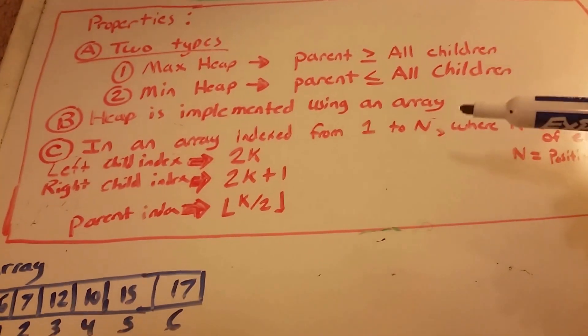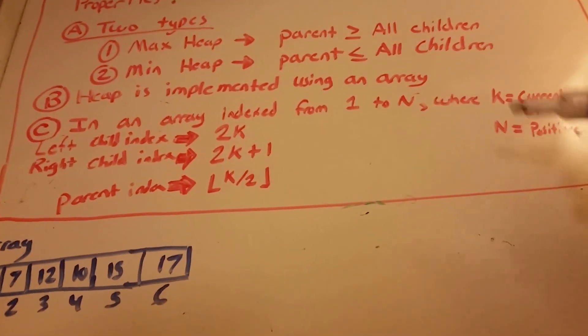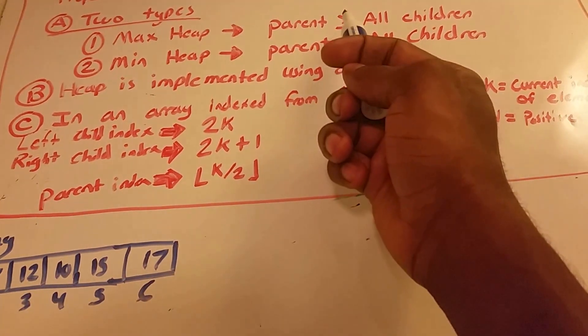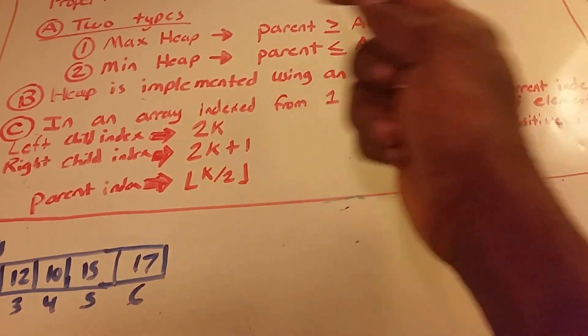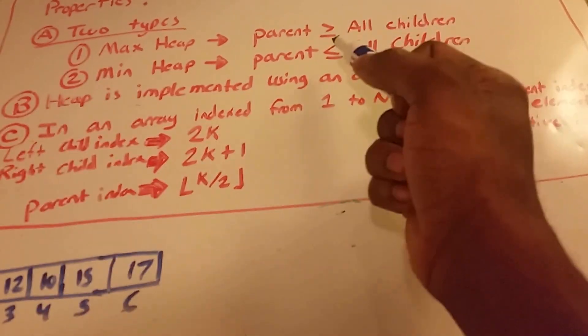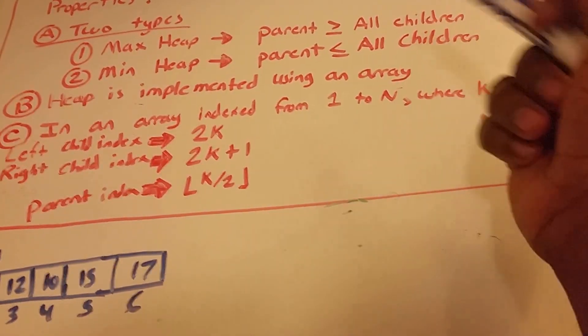A heap is a specialized tree-based data structure that satisfies the heap property. There are two types of heaps. There's the max heap, whose parent's value is greater than or equal to all of its children values. And then there's the min heap, whose parent's value is less than or equal to all of its children's values.